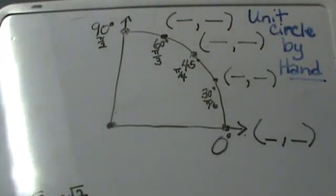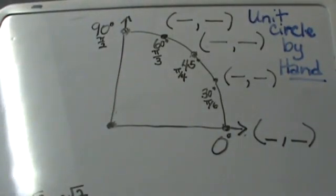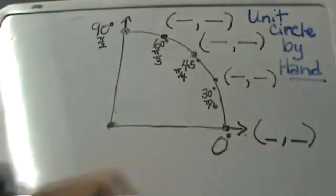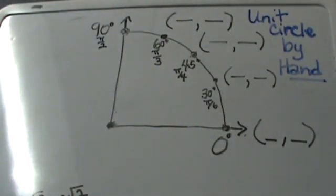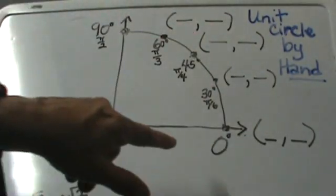Hi and welcome to MooMooMath. Today we are going to learn how to do the unit circle by hand. What that means is we are going to use our hand to find the values in the first quadrant of the unit circle, at least in this video. There will be a second video that explains how to take that and transfer it to the whole unit circle.